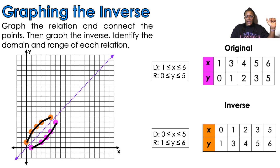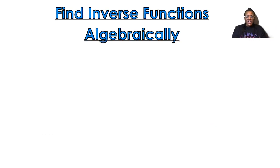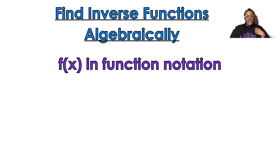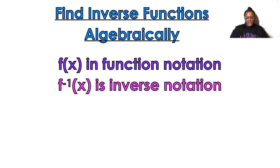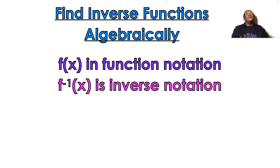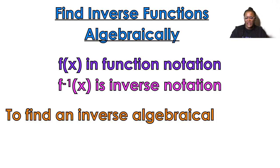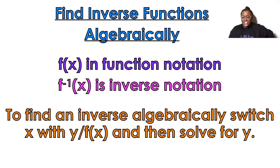That's graphing — easy. Now let's find inverse functions algebraically. First, you need to know some notation. f(x) is function notation — it's how you denote a function. f⁻¹ is inverse function notation, so f⁻¹(x) denotes an inverse. It's just a name; don't overthink it. To find an inverse algebraically: switch x with y (or with f(x)), then solve for y.